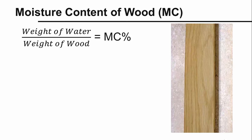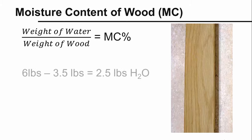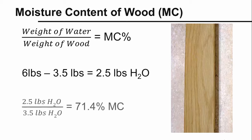The amount of water contained in a piece of wood is called moisture content. In wood, the moisture content is expressed as the weight of the water present in the wood divided by the dry weight of the wood, and is expressed in percent. For example, if a piece of wood weighs six pounds with the water included and three and a half pounds without the water, there are two and a half pounds of water in the piece of wood. Dividing the weight of the water by the weight of the dry wood gives a moisture content of 71.4 percent.